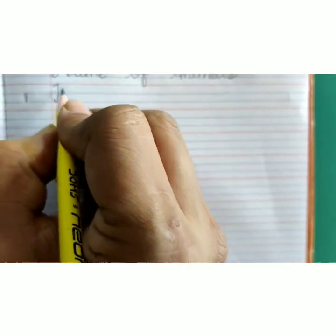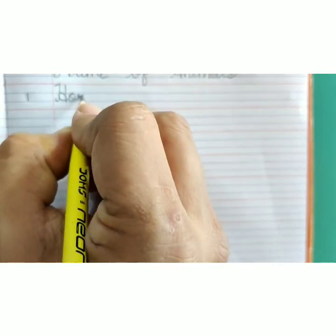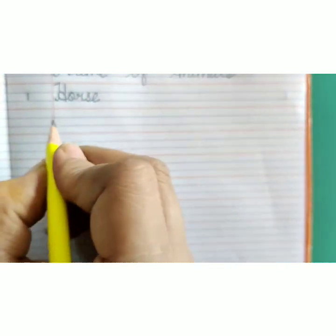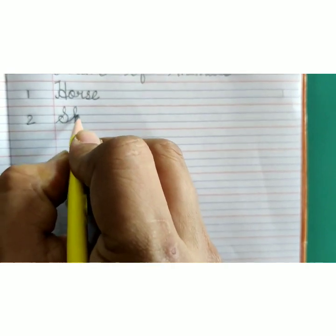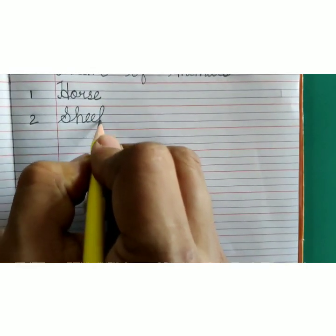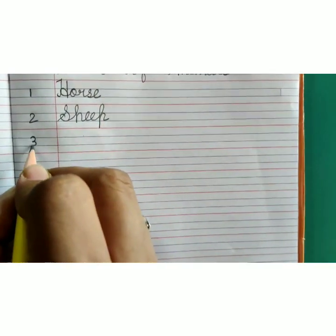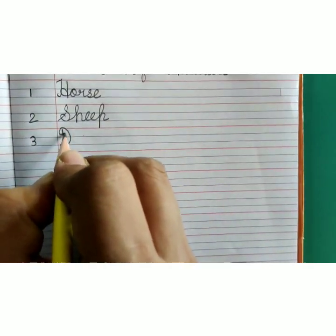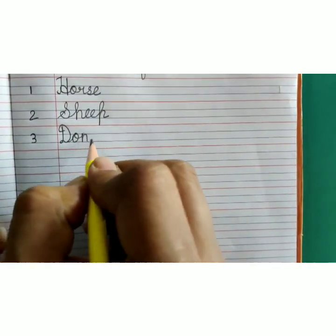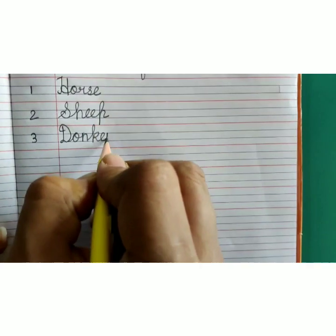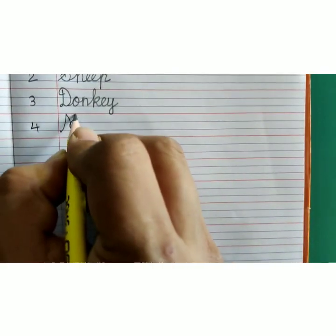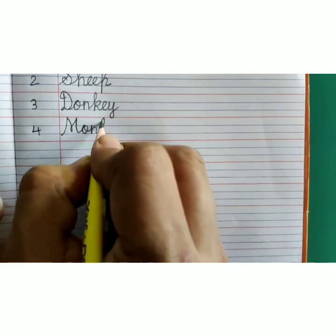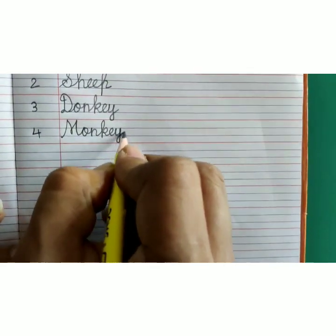In margin write number 1, H-O-R-S-E, horse. Number 2, S-H-E-E-P, sheep. Number 3, D-O-N-K-E-Y, donkey. Number 4, M-O-N-K-E-Y, monkey.